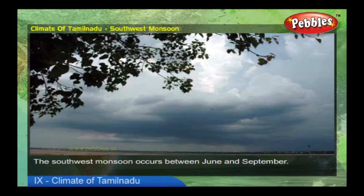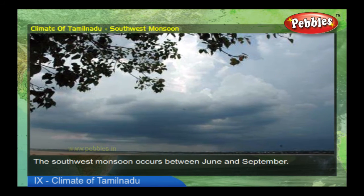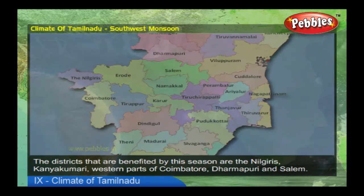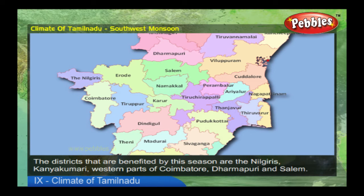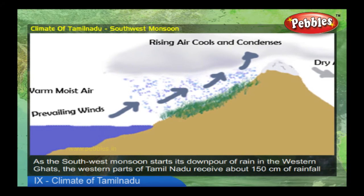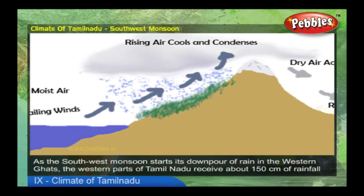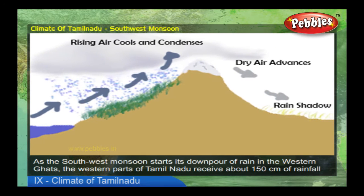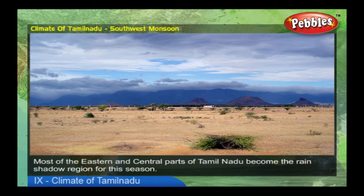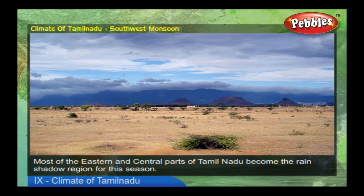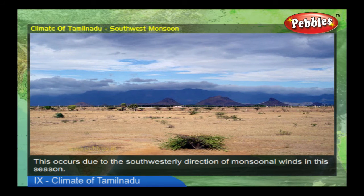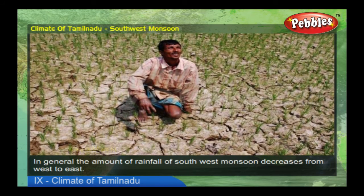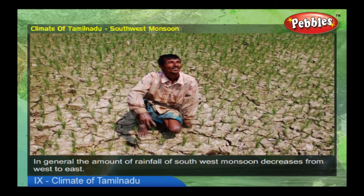The southwest monsoon occurs between June and September. The districts benefited by this season are the Nilgiris, Kanyakumari, western parts of Coimbatore, Dharmapuri, and Salem. As the southwest monsoon starts its downpour in the Western Ghats, the western parts of Tamil Nadu receive about 150 centimeters of rainfall on average. Most of the eastern and central parts of Tamil Nadu become the rain shadow region for this season, due to the south-westerly direction of monsoonal winds.